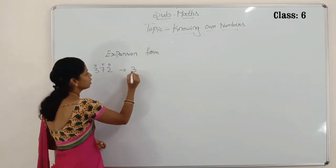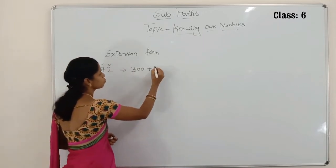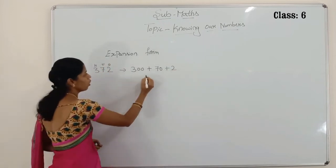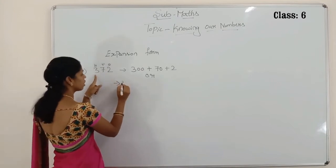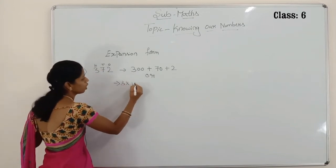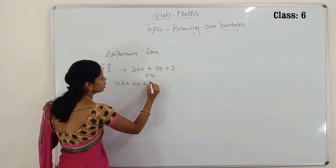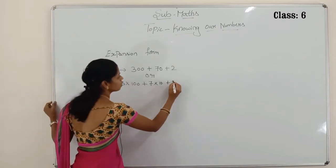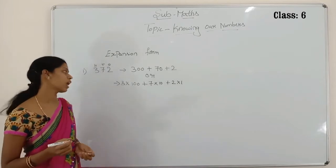See — 300 plus 70 plus 2. Or, we can write it the second way: 3 is in the hundreds place, 7 is in the tens place, 2 is in the ones place. You can write both methods — both are correct and easy to understand.